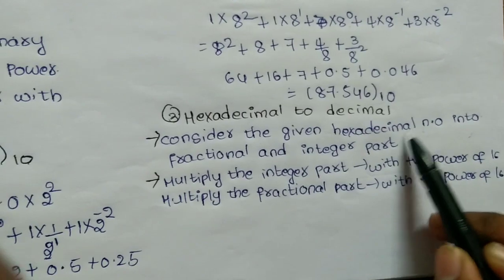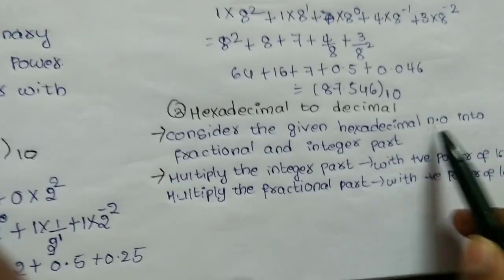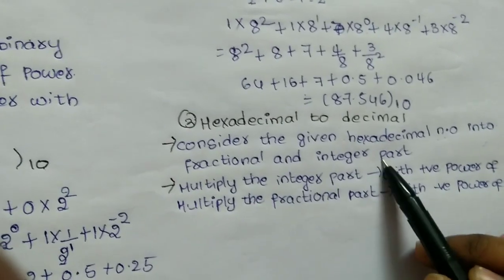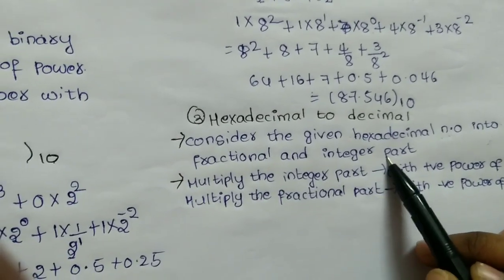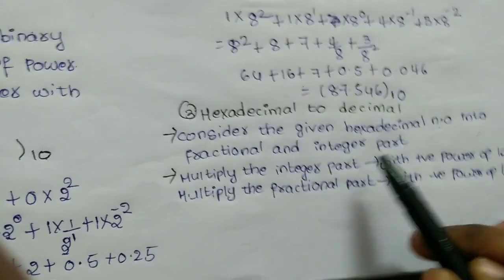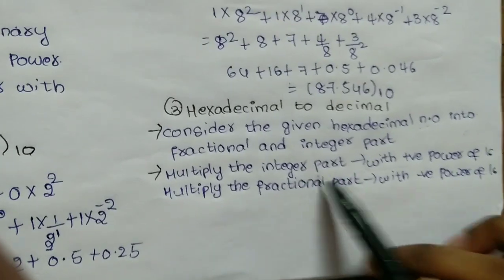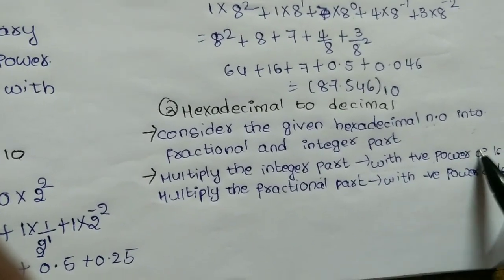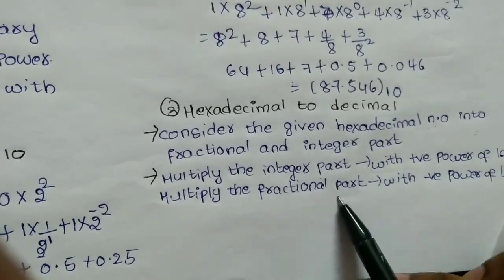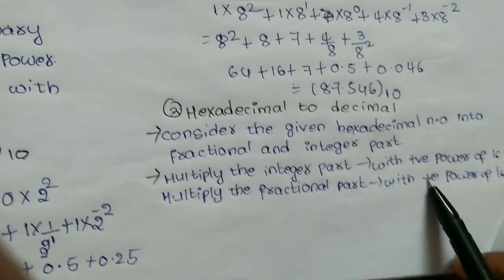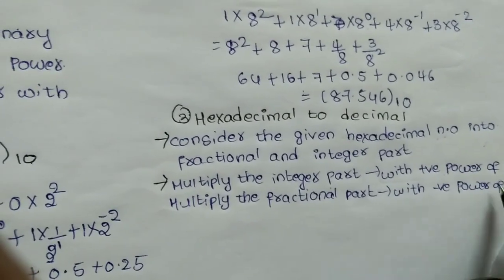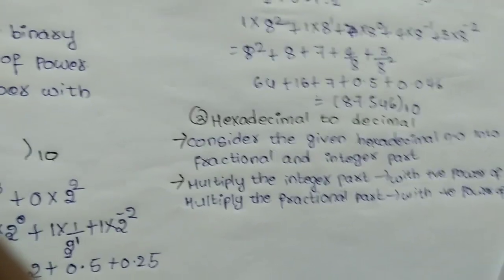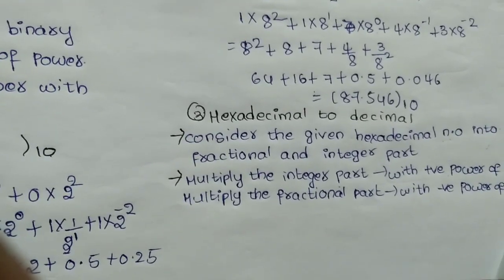Now consider the hexadecimal number. We take the integer part and the fractional part separately. The integer part is multiplied with positive power of 16, and the fractional part is multiplied with negative power of 16. Here we go to an example.